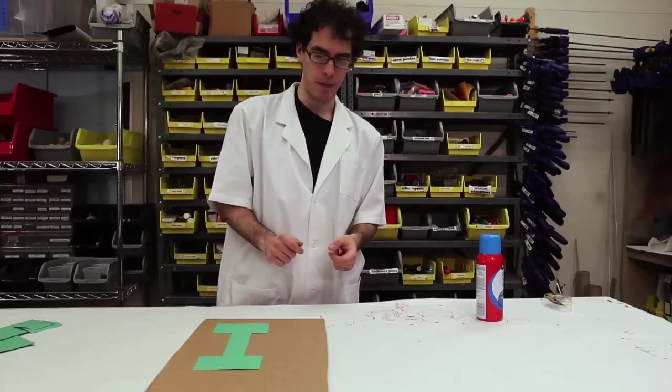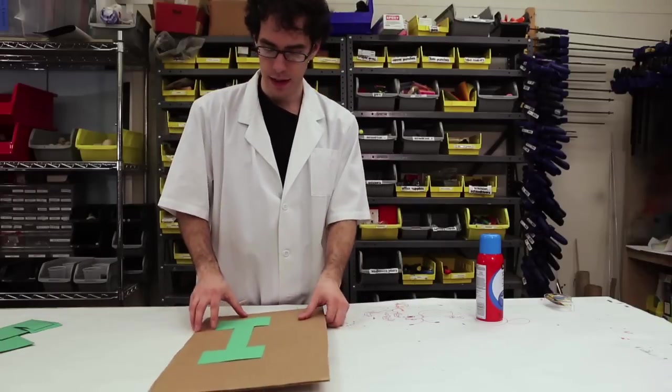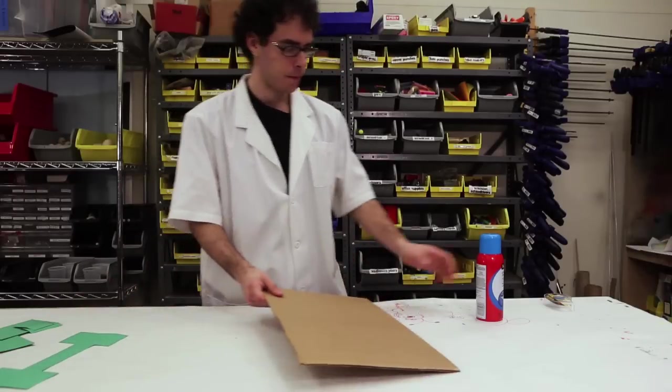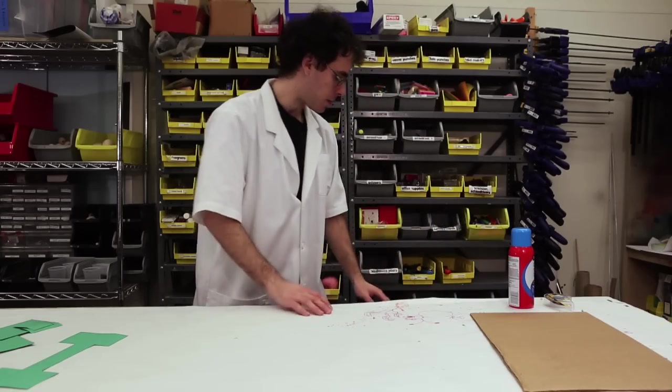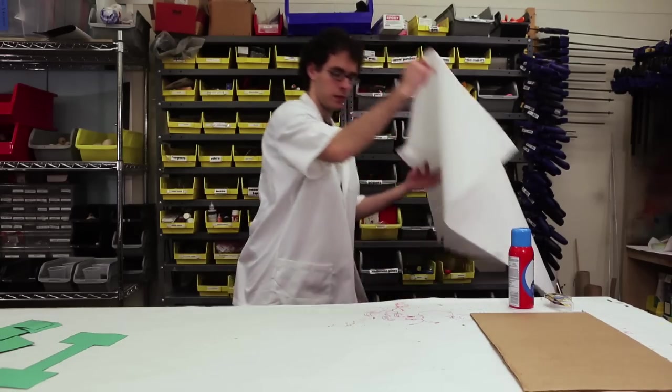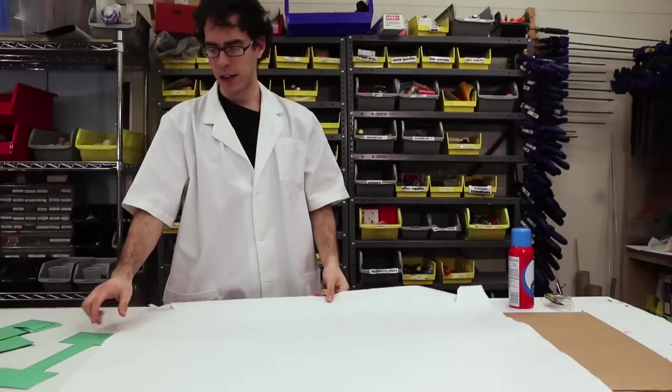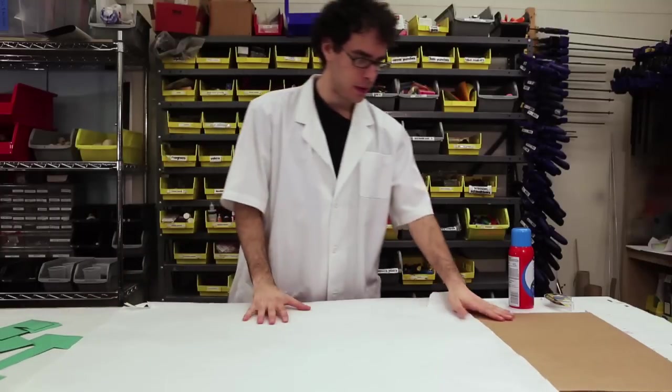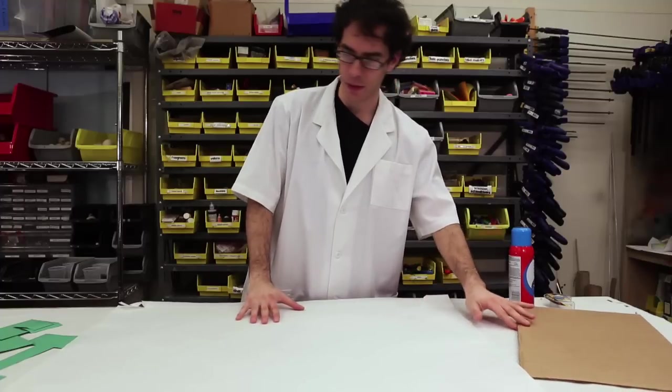Spray glue can be particularly messy. So the first thing I'm going to do is clear off my work space and lay down some scrap paper. And that will catch any excess glue that starts to go all over the place.